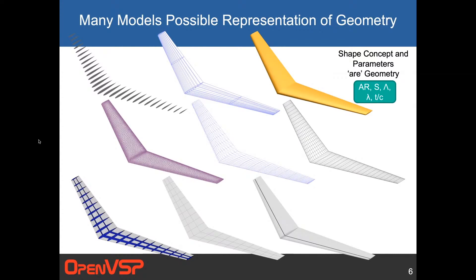Which of these is really the geometry? What we want to emphasize with VSP is that the shape is really just an idea, and each of these representations are all representations of the same shape. In VSP, the true geometry is the parameters: the aspect ratio, the area, the sweep angle, the taper ratio, the thickness to chord. These parameters are the geometry. From that, we generate these different shapes. That's a little bit different than the way CAD would work.